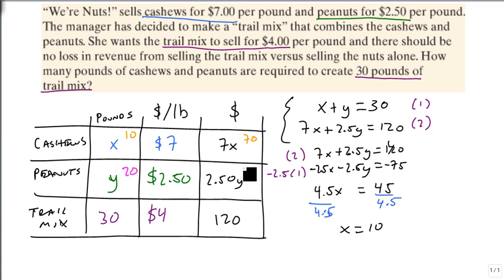20 times 2.5 is 50. And 70 plus 50 is 120. 10 plus 20 is 30. So we know our answers are we need 10 pounds of cashews and 20 pounds of peanuts.